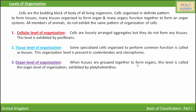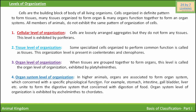The third level is organ level of body organization, where tissues are grouped together to form organs. This level is exhibited by platyhelminthes. The last is organ system level of body organization, where in higher animals organs associate to form organ systems concerned with specific physiological functions. For example, the stomach, intestine, gallbladder, and liver unite to form the digestive system, concerned with digestion of food.